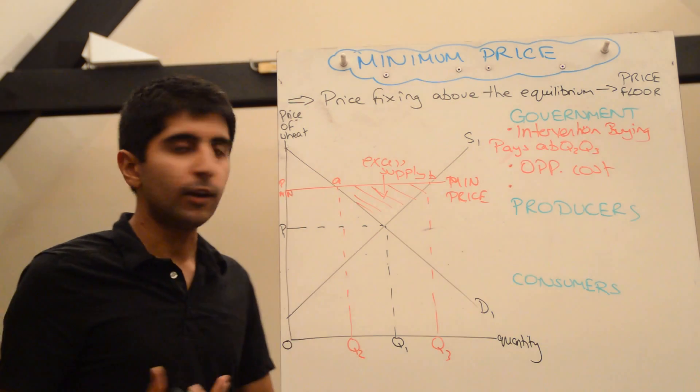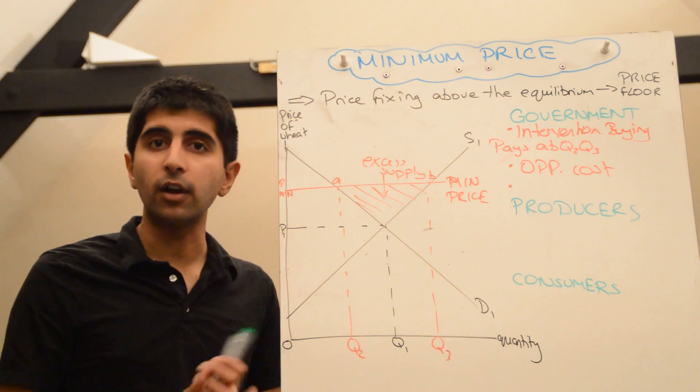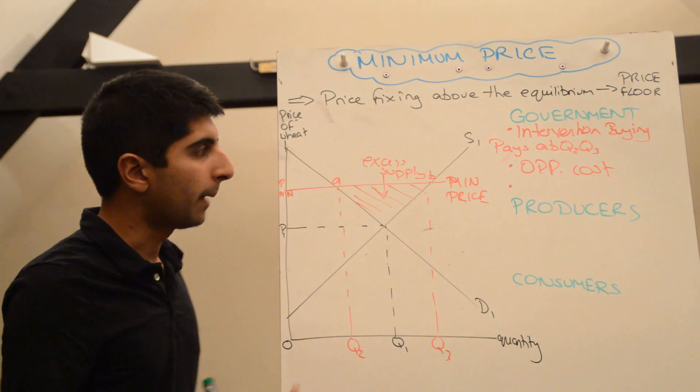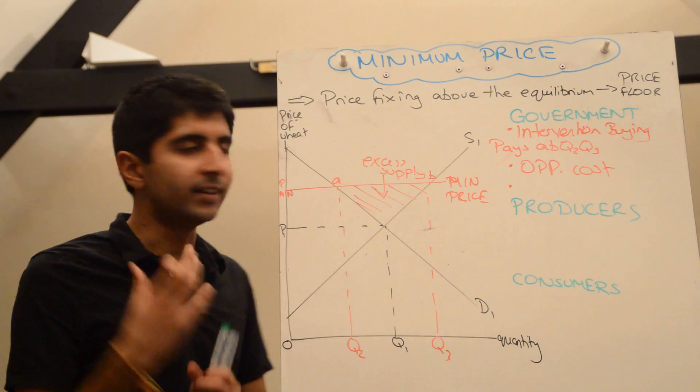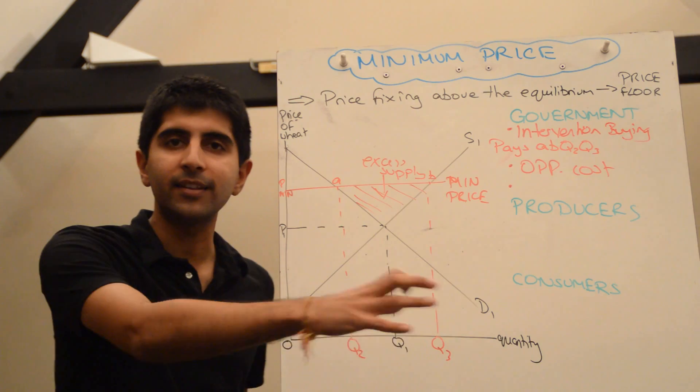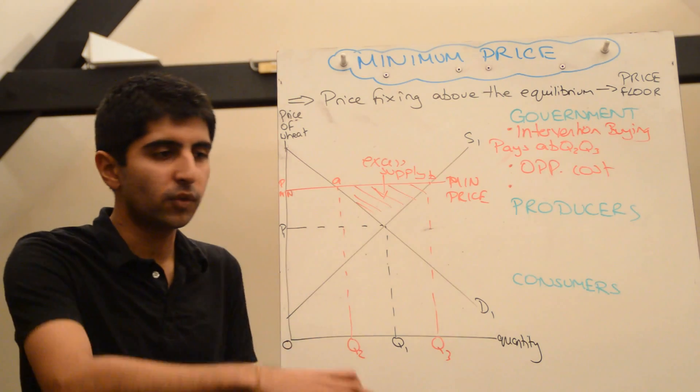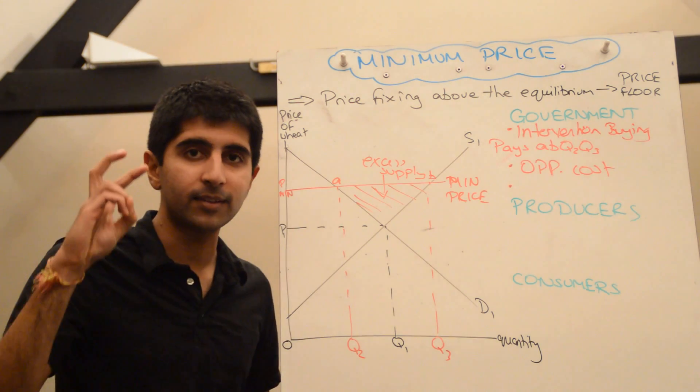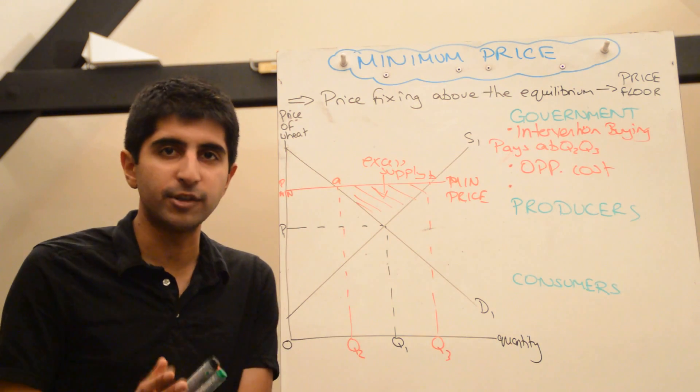In the EU, this is actually seen a lot. Minimum prices are given to agricultural producers in the EU. And the way that governments deal with the excess supply problem is that they make producers set aside land every year to make sure that they don't grow on that land, to make sure that basically the excess supply is not actually grown and produced.